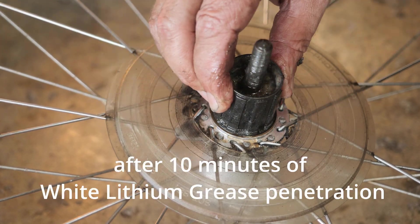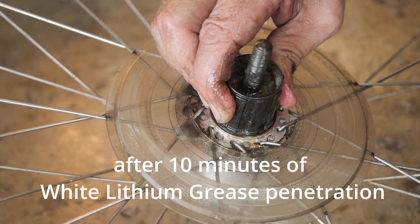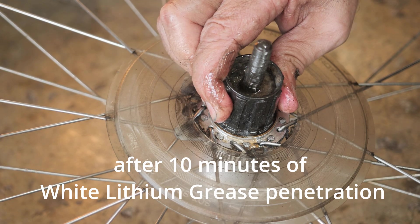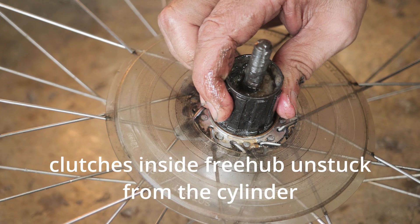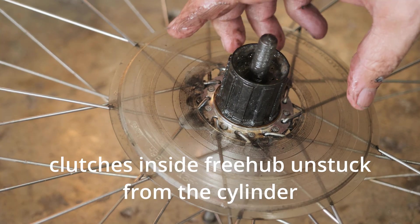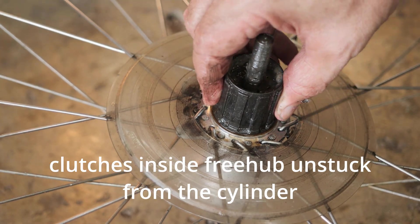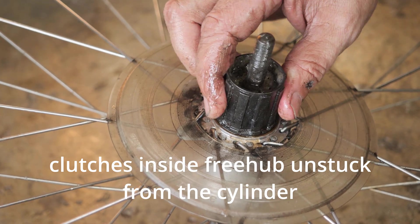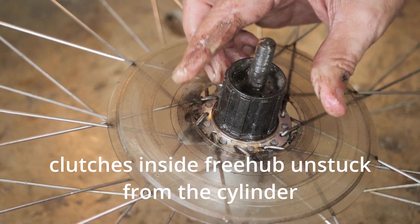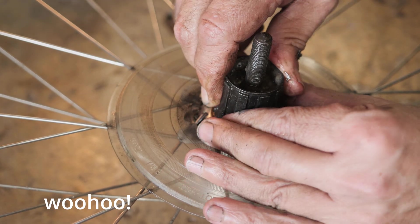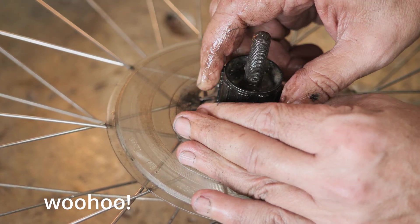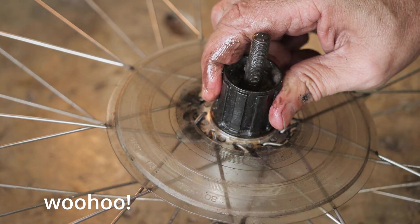It's now no longer turning to the right which means the pedals inside unstuck themselves. This white lithium grease dissolved the old grease, the old dry grease and the clutches popped out. You can see now the freehub is no longer turning to the right.